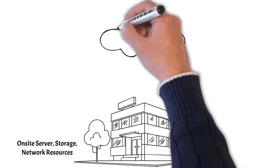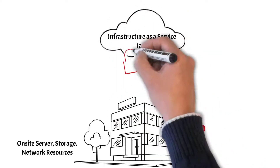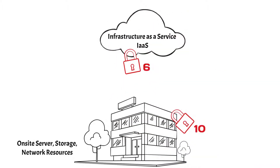When we move to infrastructure as a service, we're talking about the types of services available with that model. Essentially, you're offloading some of your services to a cloud provider, but you're still managing about half of those services internally with internal resources.